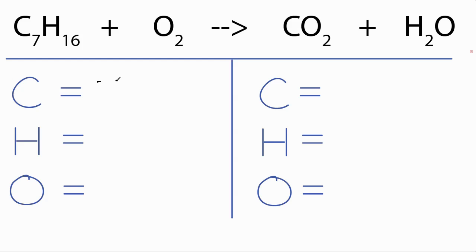So we have seven carbons, we have 16 hydrogens, and two oxygens on the reactant side. And over here on the products, we have one carbon, we have two hydrogens, and we have two oxygens. But remember, we have to count that oxygen atom with water, so that's another one. So we have a total of three oxygen atoms on the product side.